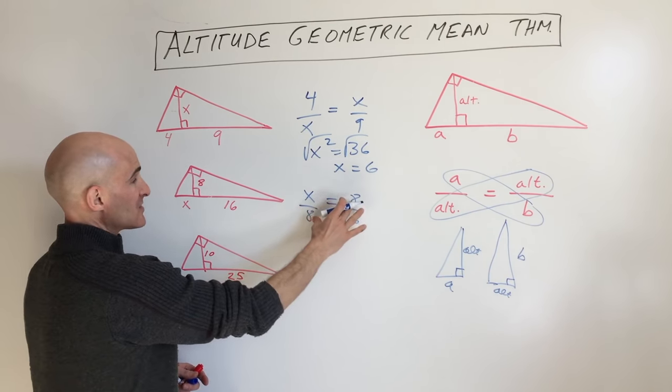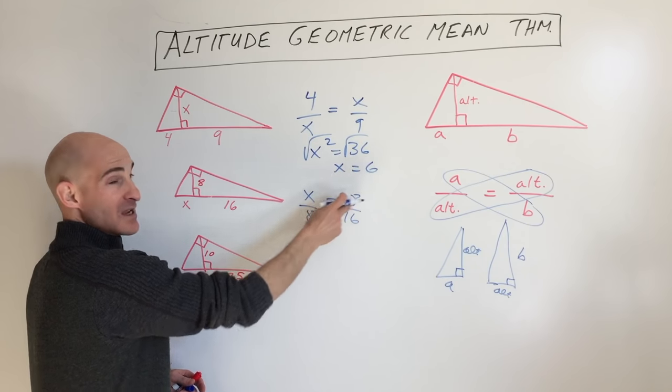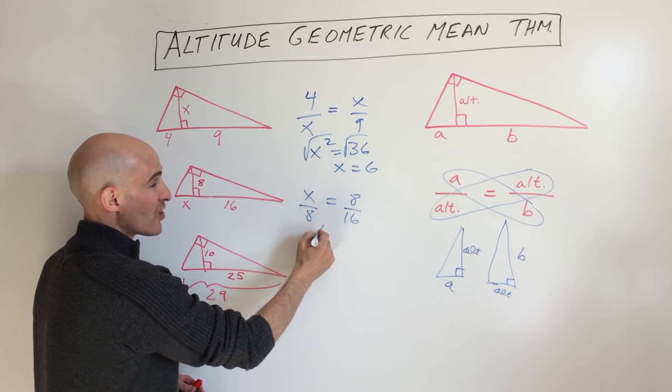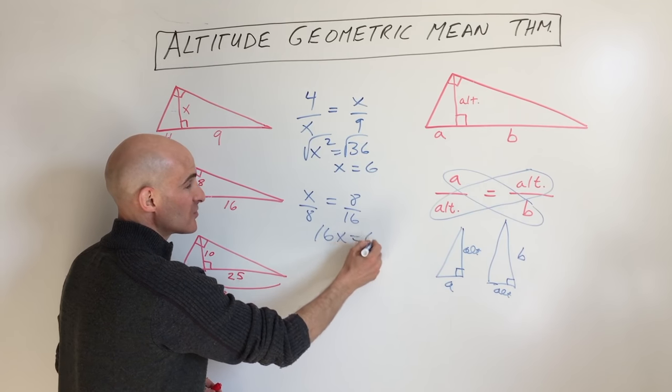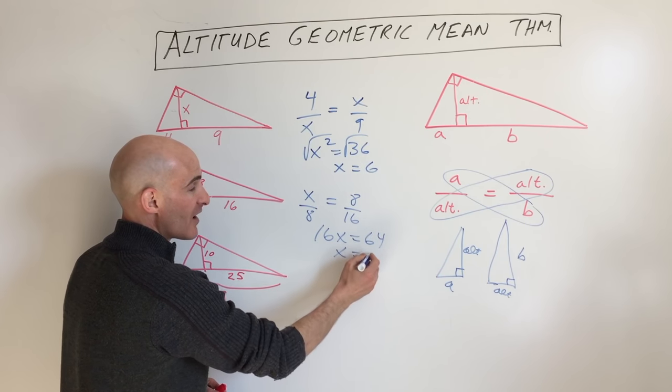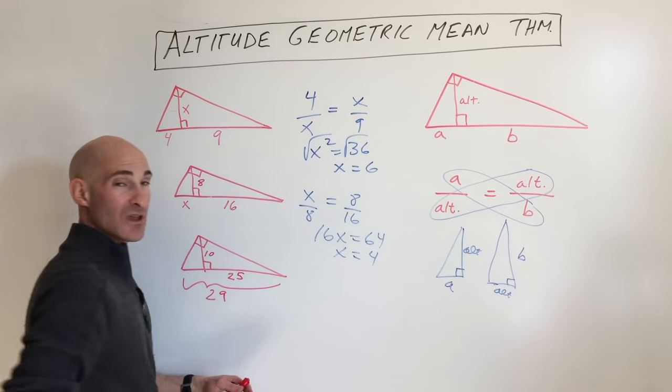Again, you can see the altitude is the mean, these are the means, and these are the extremes. So if we cross multiply, we get 16x equals 64, divide by 16, and we get 4.